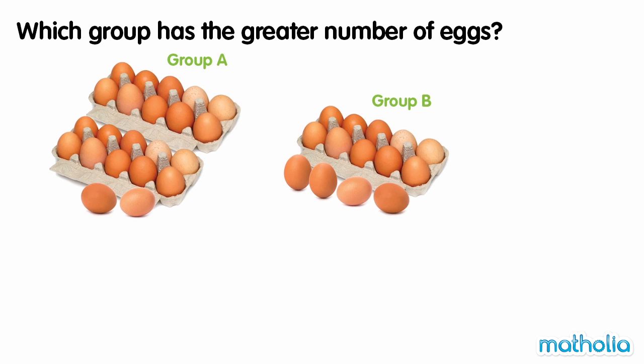Which group has the greater number of eggs? In group A, there are two cartons of ten eggs and two single eggs. Two tens and two ones make twenty-two. There are twenty-two eggs in group A.